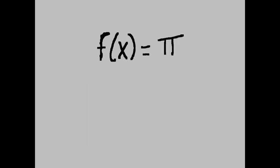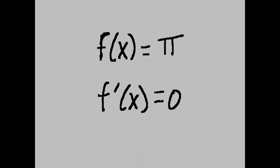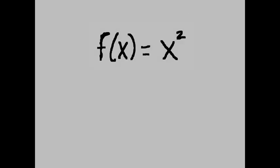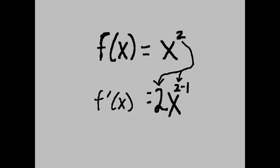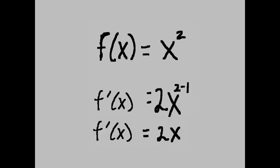f of x equals pi, a constant — f prime of x equals 0. f of x equals e, a constant — f prime of x equals 0. Now with variables: f of x equals x squared, f prime of x equals — bring down the 2 — 2x to the 2 minus 1 power, which equals 2x.